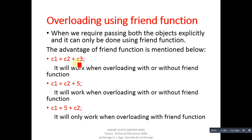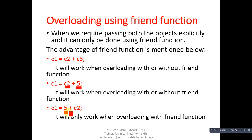The second statement is c1 equals c2 plus 5. Here c2 is an object and 5 is a constant value, so it will work with or without friend function. The last statement is c1 equals 5 plus c2. In this case 5 is a constant and c2 is an object, and it will only work when overloading with friend function.